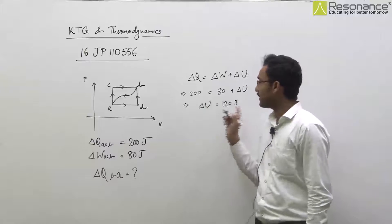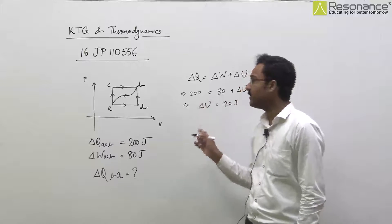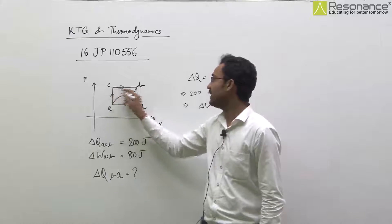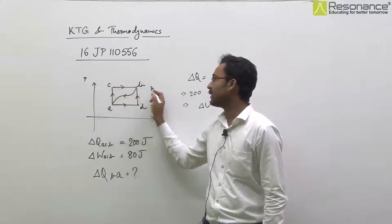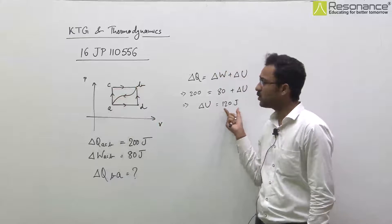Now, internal energy me change independent hota hai process ke. Process kuch bhi ho, gas A se B, A se B par agar pahunch rahi hai, toh internal energy mein change 120 joule hi hoga.